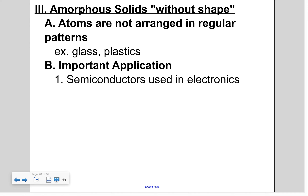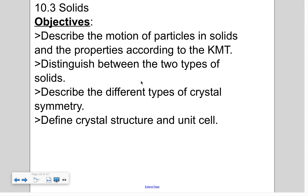Amorphous solids — 'amorphous' means without shape. They are not arranged in a regular pattern. Examples include glass, plastics, rubber, and cotton candy. They serve a very important application in electronics, especially as semiconductors. That covers section 10.3 on solids. You should have handed in your 10.1 and 10.2 worksheet, and there's a 10.3 worksheet tied to 10.4 — at least start the 10.3 side. On Monday we'll cover 10.4, which is titled 'Changes of States.'